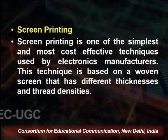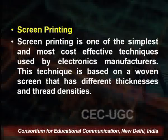The first method used for development of the flexible antenna is screen printing. Screen printing is one of the simplest and most cost-effective techniques used for manufacturing electronic circuits. This technique is based upon a woven screen with different thicknesses and thread densities. To produce a printed pattern, a squeegee blade is driven down, forcing the screen into contact with a fixed substrate, causing ink to eject through the exposed area of the screen, and thus the desired pattern is formed on the substrate.